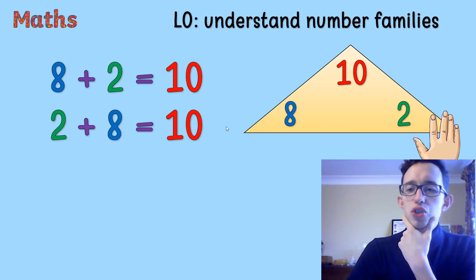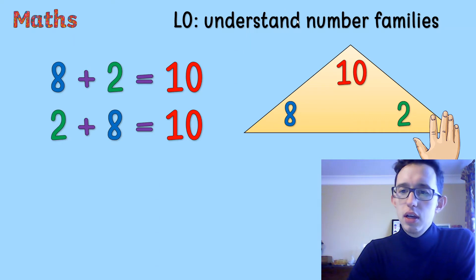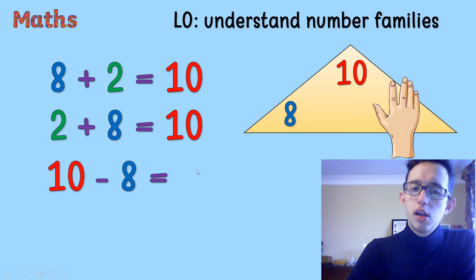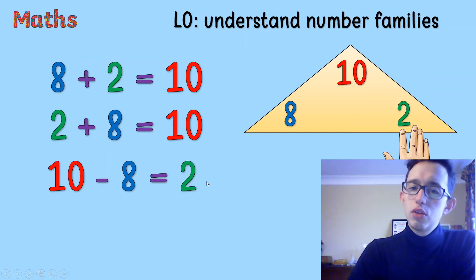Maybe we want to make a takeaway or a subtract number sentence. So what we could do there is we can start by covering up that 10. Well, 10 is the biggest number. So we need to start with 10 and we need to take away one of those numbers. So if we start with 10 and we take away 8, the number that we're not using is the number that the answer will be. So 10 take away 8 equals 2 because that's where the 2 was. You can cover that up with your hand and then that's how we find the answer. 10 take away 8 equals 2.